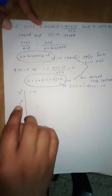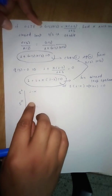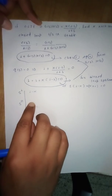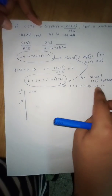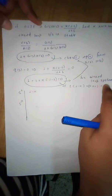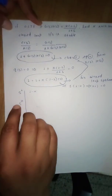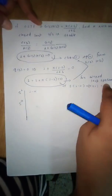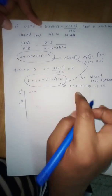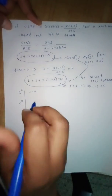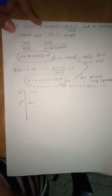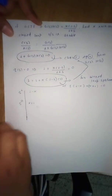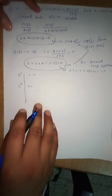For the second row, the first coefficient is defined by the coefficient of s to the power 0 from the given characteristic equation, which is (k + 1). So this completes our Routh array table with first column elements: (1 - k) and (k + 1).